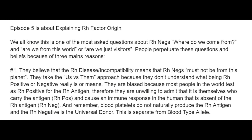People perpetuate these questions and beliefs because of three main reasons. Number one: they believe that the Rh disease incompatibility means that Rh negs must not be from this planet. They take the us-versus-them approach because they don't understand what being Rh positive or negative really means. They are biased because most people in the world test as Rh positive for the Rh antigen. Therefore, they are unwilling to admit that it is themselves who carry the antigen and cause an immune response in the human that is absent of the Rh antigen — the Rh neg.